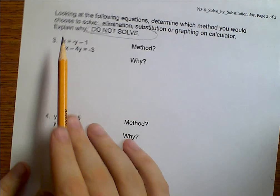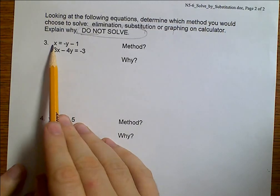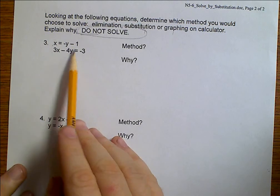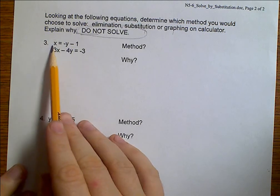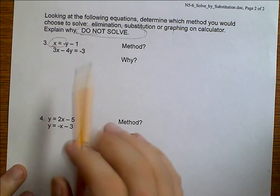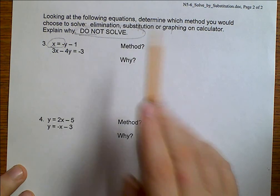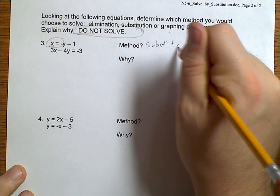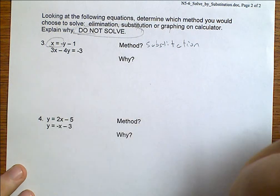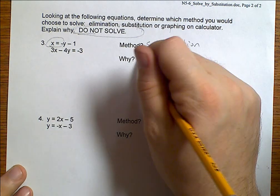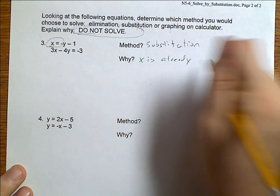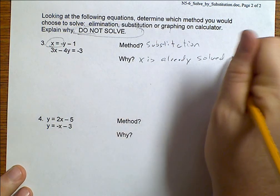Let's take a look at number 3. Number 3, X is solved for. And over here, nothing is solved for. Well, because X is solved for something, we want to use substitution. X is already solved for.